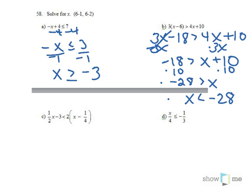In part C, I need to distribute on the right-hand side. So on the left-hand side, I have 1 half x minus 3 is less than 2x minus 1 half. So I multiply that side by 2.